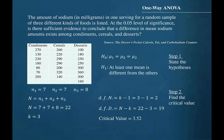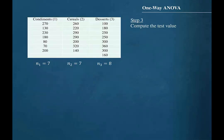In a previous video, we learned how to find the critical value for a one-way analysis of variance F-test to compare the means of sodium amounts between condiments, cereals, and desserts. We found that critical value to be 3.52. Step 3 for this hypothesis test is to compute the test value.